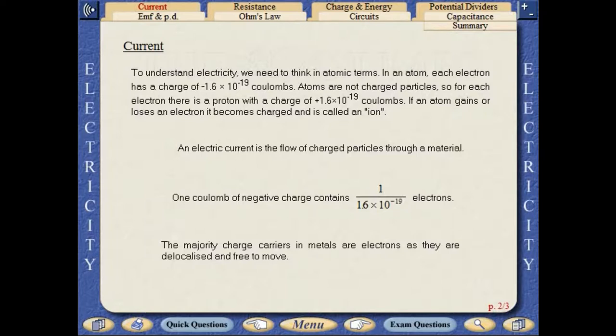An electric current is the flow of charged particles through a material. The majority charge carriers in metals are electrons, as they are delocalised and free to move.